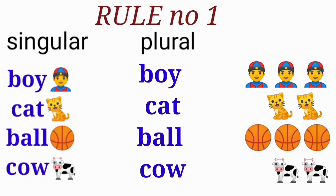we spell them out: B-O-Y-S, boys. C-A-T-S, cats. B-A-double L-S, balls. C-O-W-S, cows.